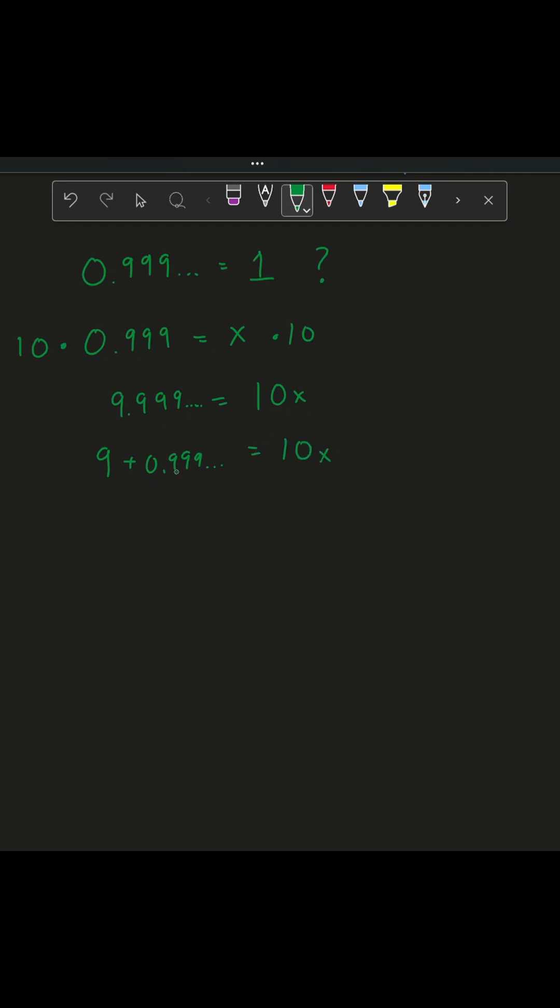And this guy, this 0.9999, this is just the x that we started with, right? That's what we named it. So we've got 9 plus x equals 10x.